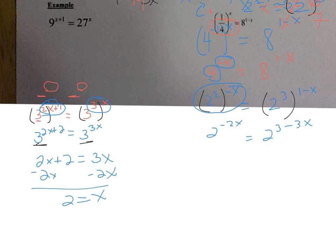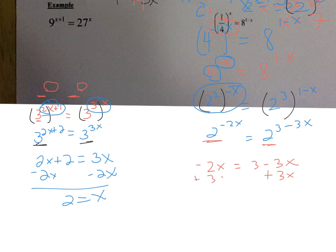Now they have the same base — both base 2. So I take the exponents: negative 2x equals 3 minus 3x. I add 3x: x equals 3. And that's it. We'll practice more in class tomorrow. Have a good night.